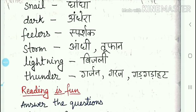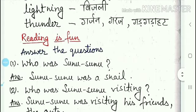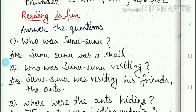Thunder means garjan, garaj, ya phir gargarahat. Now we will come to the next topic, that is 'Reading is Fun'. Here you have to answer these questions. The first question is: who was Sunu Sunu?